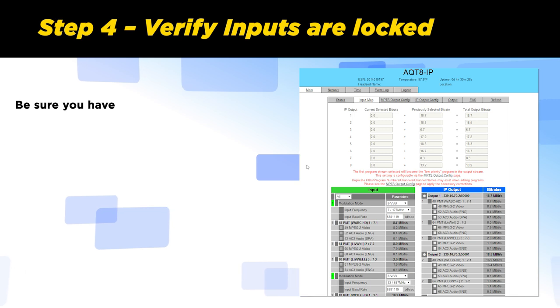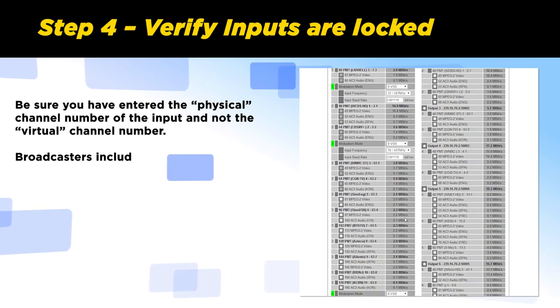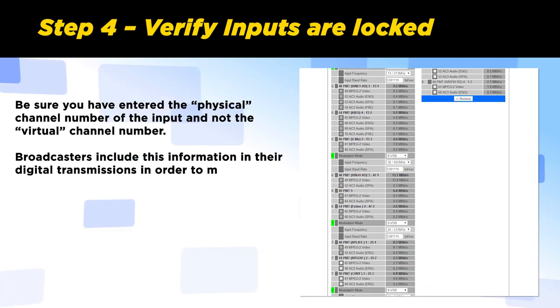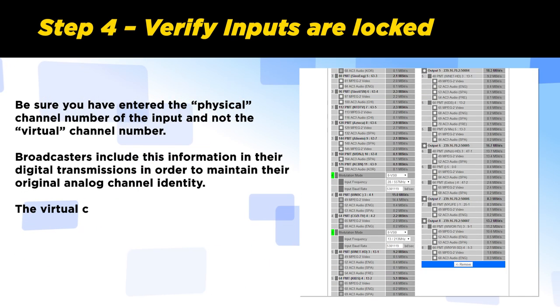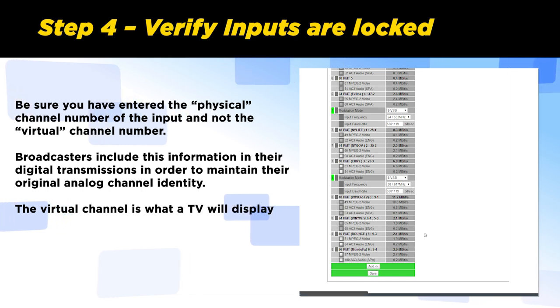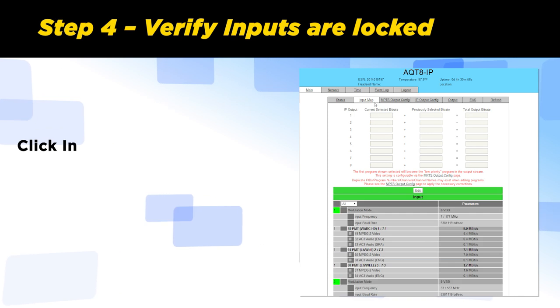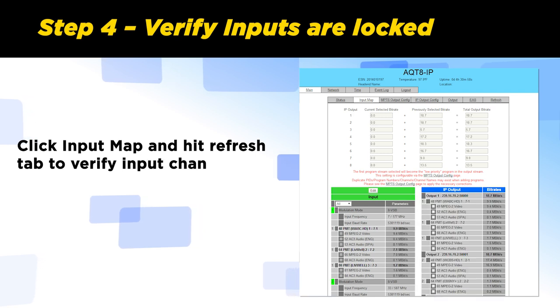Be sure you have entered the physical channel numbers of the input and not the virtual channel numbers. Broadcasters include the virtual information in their digital transmissions in order to maintain their original analog channel identities. The virtual channel is what the TV will display and in most cases will not be the same as the RF channel it is broadcasted on. Click input map and hit refresh tab to verify the input channel data.